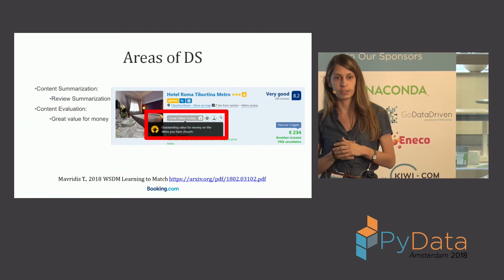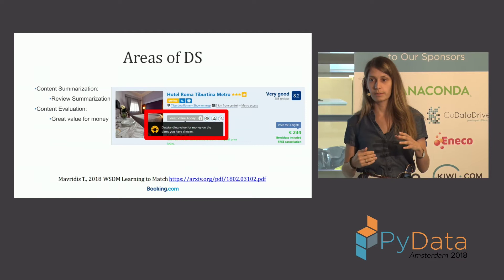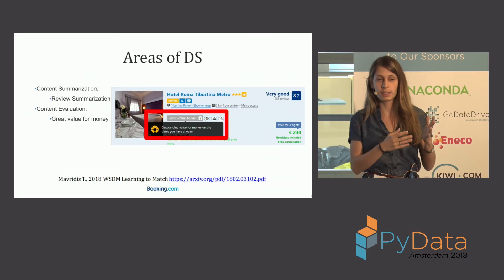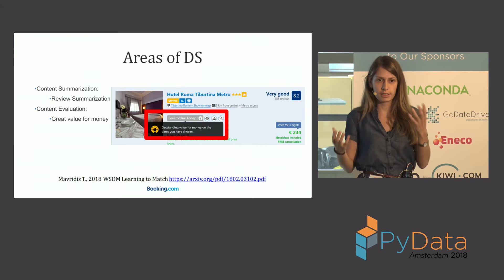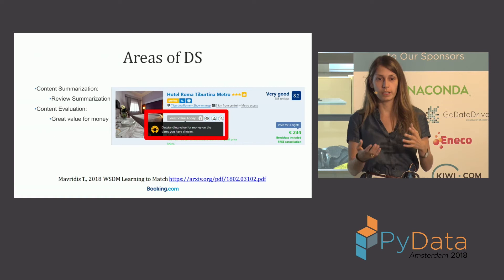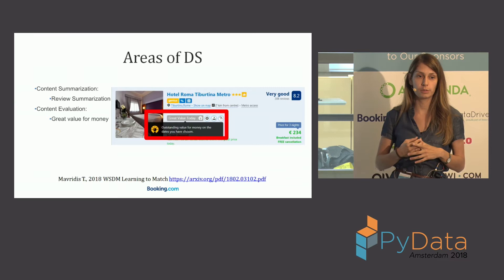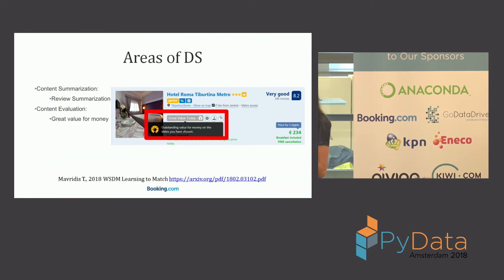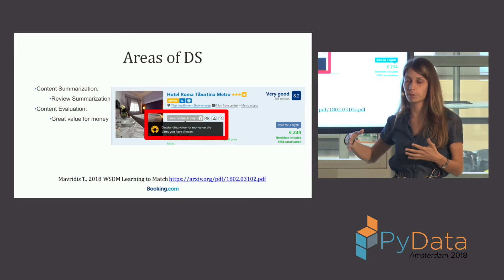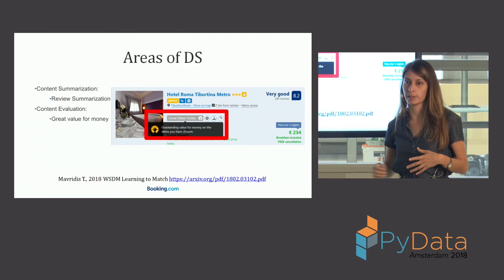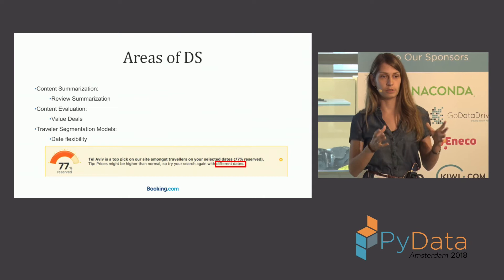Another area of machine learning that can be very useful: when users browse the website they see many different options with different prices, facilities, and locations. How do they find the best hotel and get the best value? We have a model that determines whether the value for money is actually good or not — we call this content evaluation. Instead of you evaluating all that content, machine learning does it for you, and we add a small icon that says 'great value for money.'